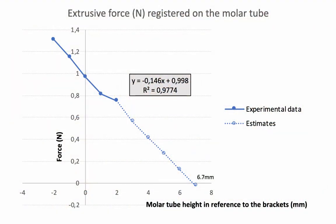In order to estimate how occlusal the molar tube had to be in order to keep extrusion from happening, we made a regression line using the experimental data. We forecasted that it had to be bonded at about 6.7 millimeters occlusal to the remaining brackets for the arch wire to produce zero extrusive force. Of course, this would not be clinically feasible.